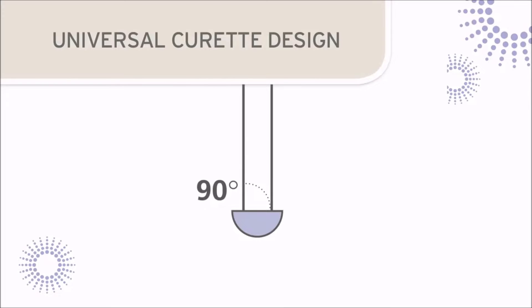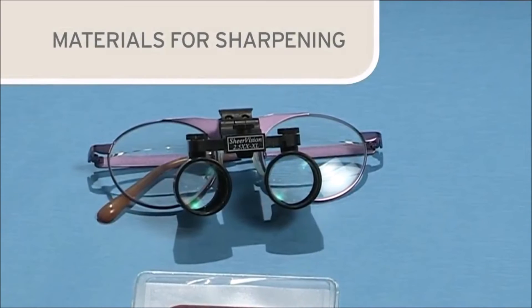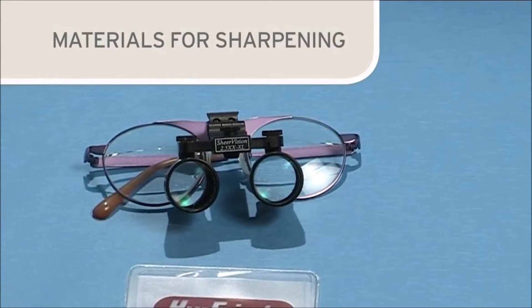When sharpening the Universal Curette, the cutting edges will be restored by grinding the stone against the lateral surfaces of the blade. Before beginning the sharpening process, assemble the required materials.